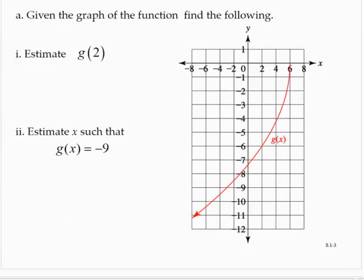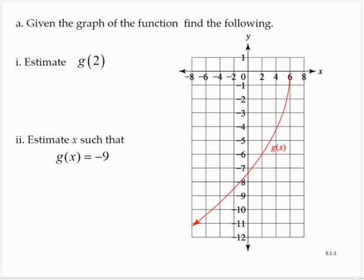Now, if we're given this graph, find the following. We're asked to estimate g of 2 and x such that g of x is equal to negative 9. All right, so to evaluate g of 2, well, the input is 2.